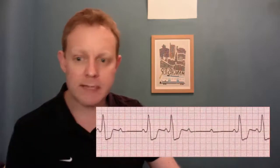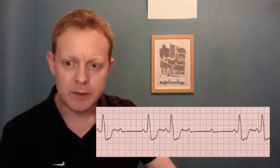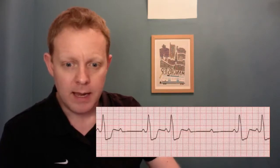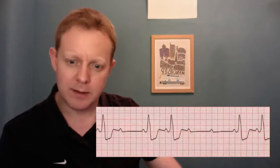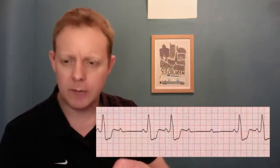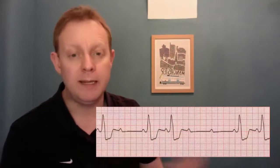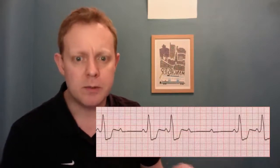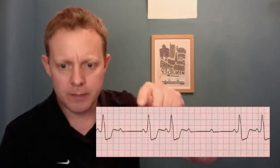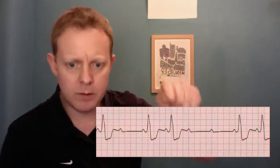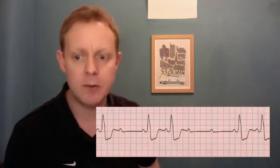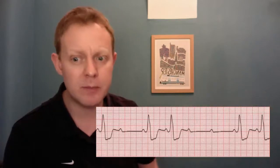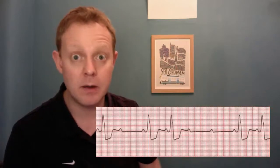Moving on, let's look at another ECG. We've got electrical activity. It's a bit slow and not regular. Is it regularly irregular or irregularly irregular? We probably need a longer rhythm strip to be sure, but we've got a basic rhythm here — one, two, one, two — going at the same rate, so that could be seen as regular.